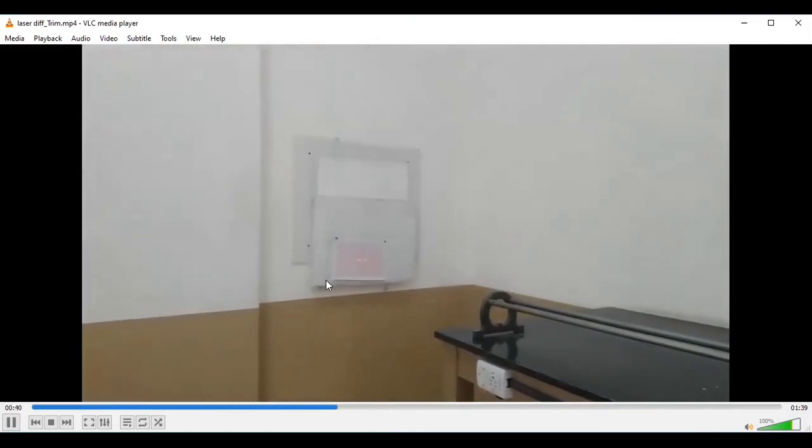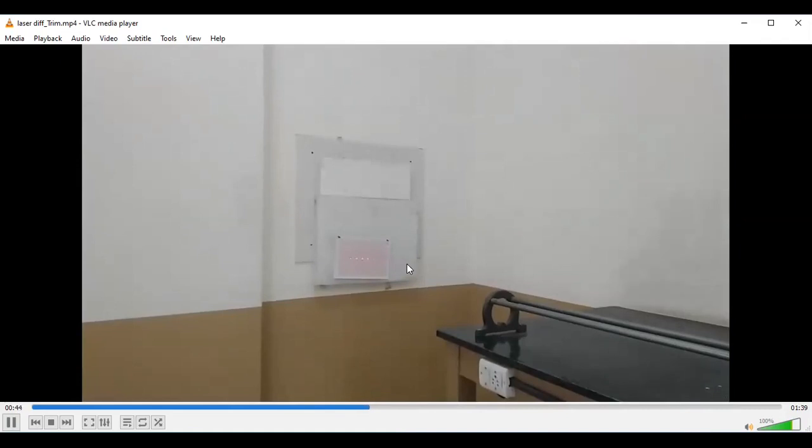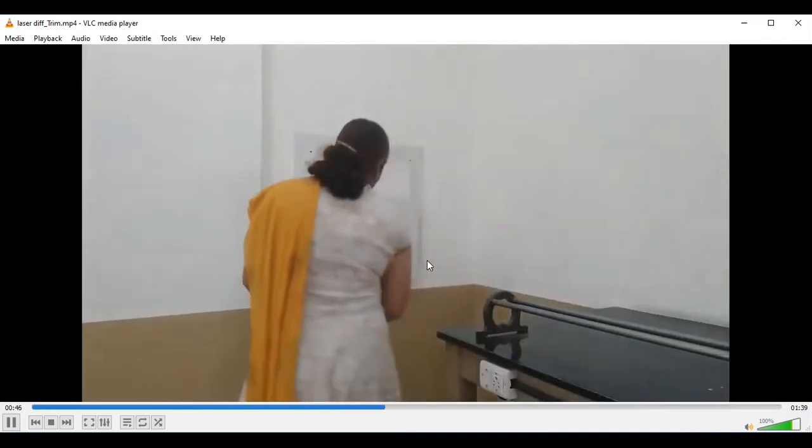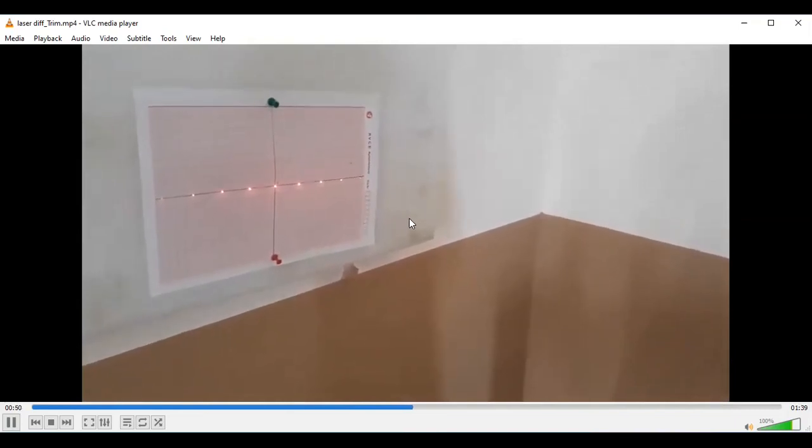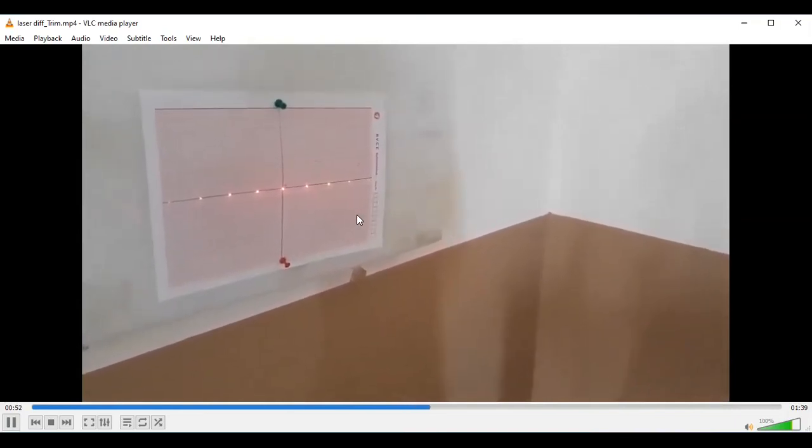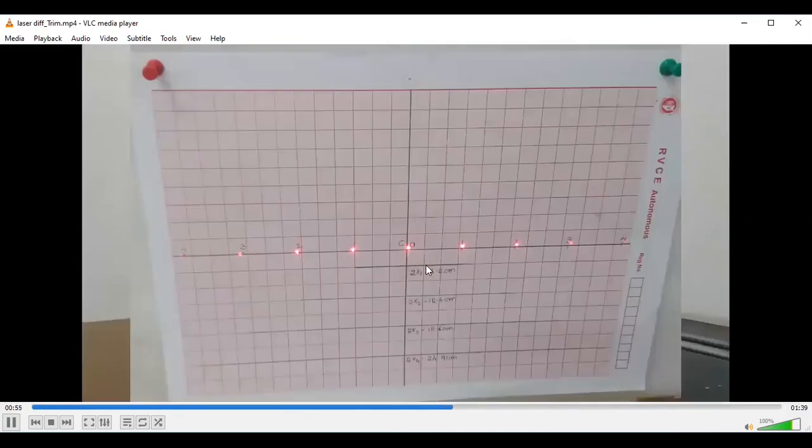And record the diffraction pattern on the surface of graph sheet with the help of pencil. Take the pencil. Mark the coordinates before you fix the graph sheet on the screen. Record the diffraction pattern. Central maxima should lie at the origin. On either side of central maxima, you are getting 1st order maxima, 2nd order maxima, 3rd order maxima till 4th order we are getting.